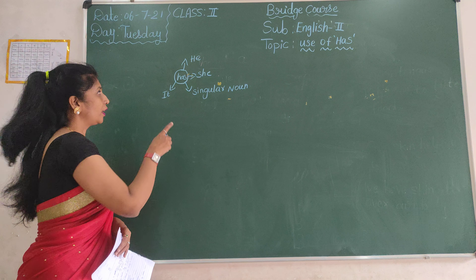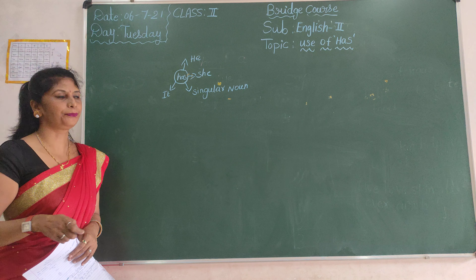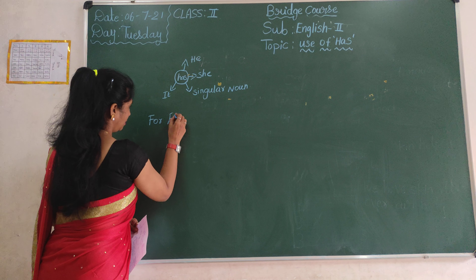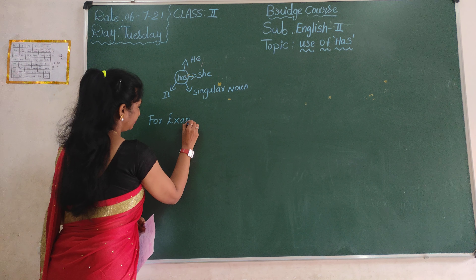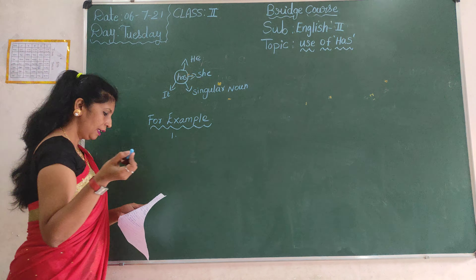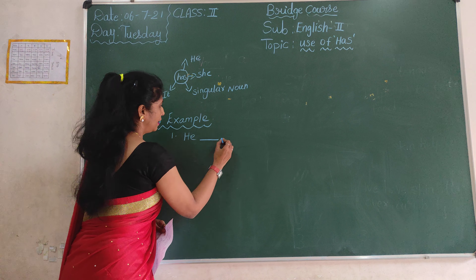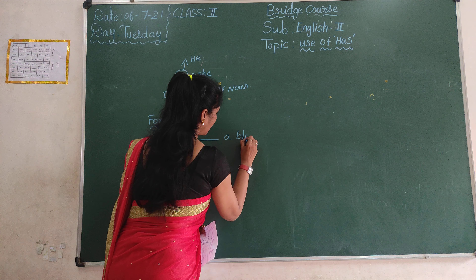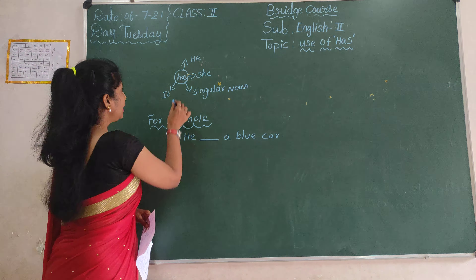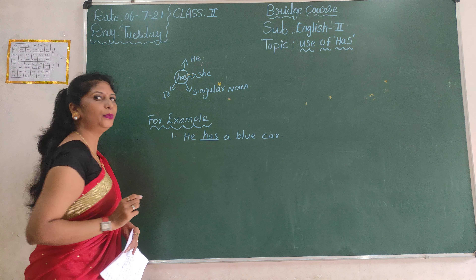We use 'has' for he and she. For example, number one: he dash a new car. The answer is he has — he has a new car.